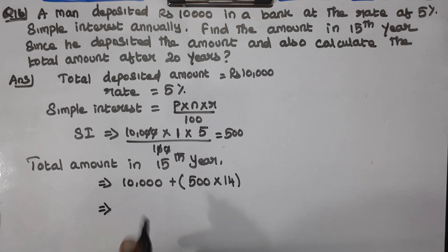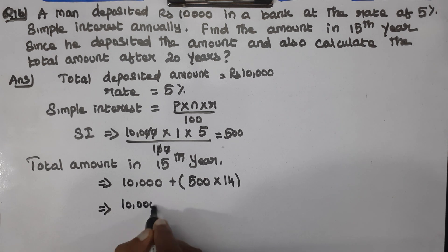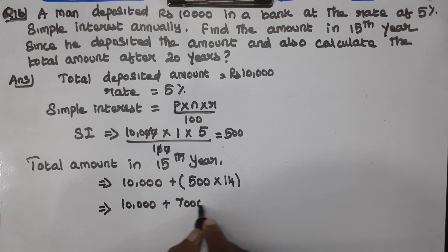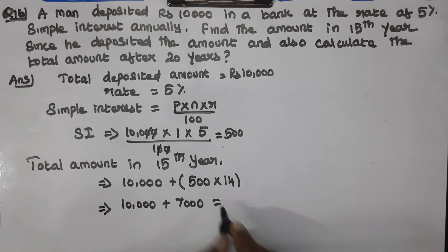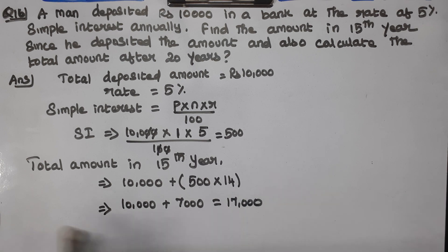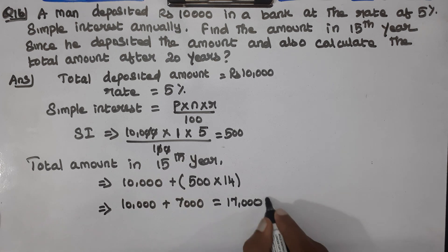10,000 plus 500 into 14 is 7,000. So 10,000 plus 7,000 is 17,000. The total amount in the 15th year is 17,000 rupees.